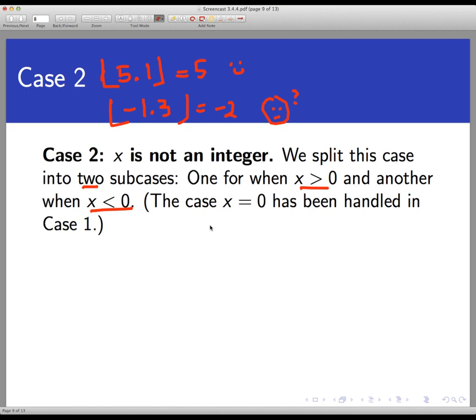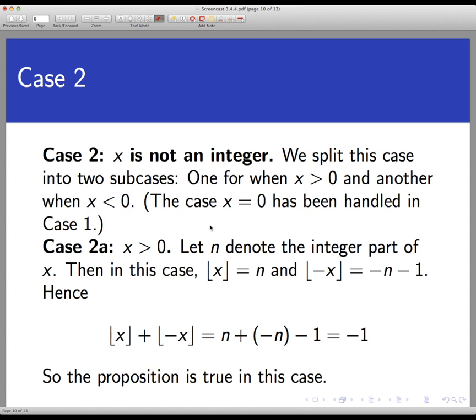So first, let's take the case where x is positive. And for this, we're going to let the letter n represent the integer part of x. That's the number, the integer you get when you take x and just strip away its decimal parts. For example, the integer part of 5.2 would just be 5. Now, when x is positive, then the floor of x is just n. For example, the floor of 5.1 was equal to just 5, and that's obtained just by stripping away the 0.1. Now, since x is positive, that, of course, means minus x is negative.